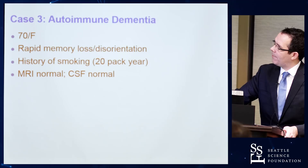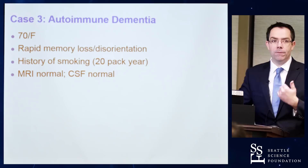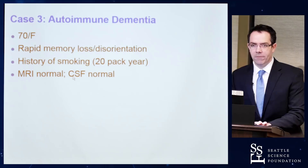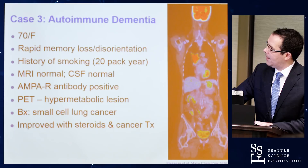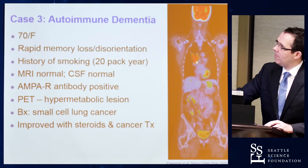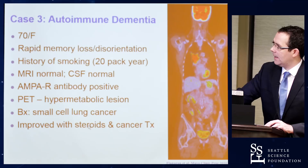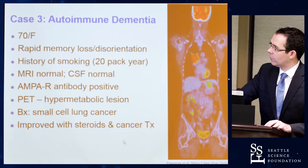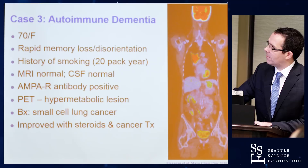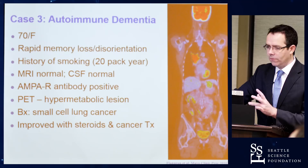A 70-year-old lady I saw presented with rapid memory loss and disorientation over a couple of months — more subacute than typical Alzheimer's disease. She had a 20 pack-year smoking history. Her MRI and CSF were both normal, but she was found to be AMPA receptor antibody positive, representing a rapidly progressive dementia — a scenario where you want to test these antibodies. She had a large small cell lung cancer on imaging and improved with steroid treatment. This antibody to a cell surface antigen tends to respond well to treatment.